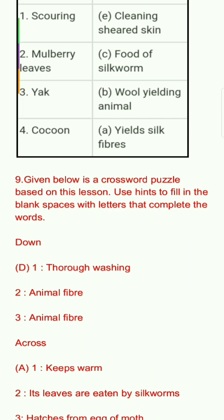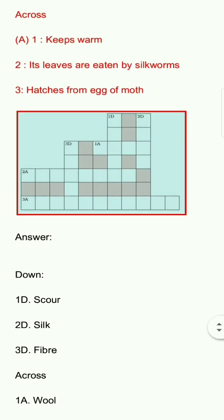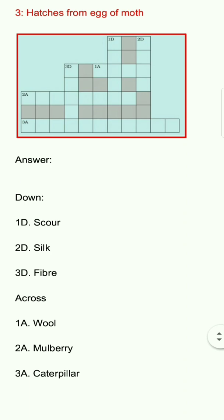Question 9: Given below is a crossword puzzle based on this lesson. Use hints to fill in the blank spaces. Down: 1) thorough washing, 2) animal fiber, 3) animal fiber. Across: 1) keeps warm, 2) its leaves are eaten by silkworms, 3) hatches from egg of moth. Answers — Down: 1) scour, 2) silk, 3) fiber. Across: 1) wool, 2) mulberry, 3) caterpillar.